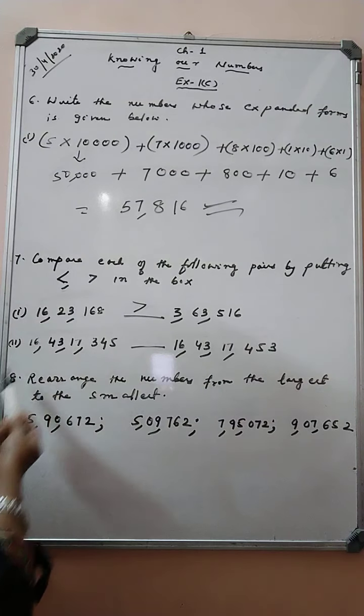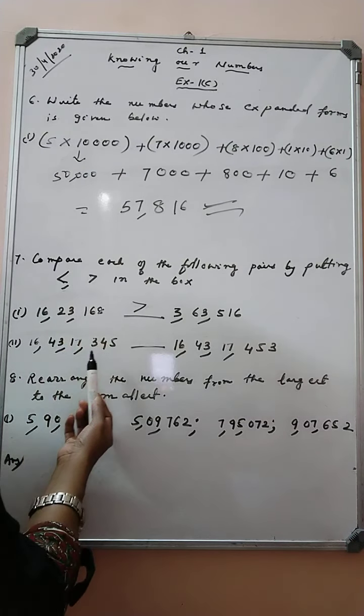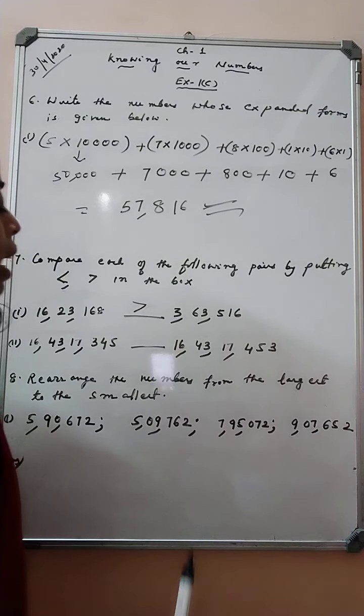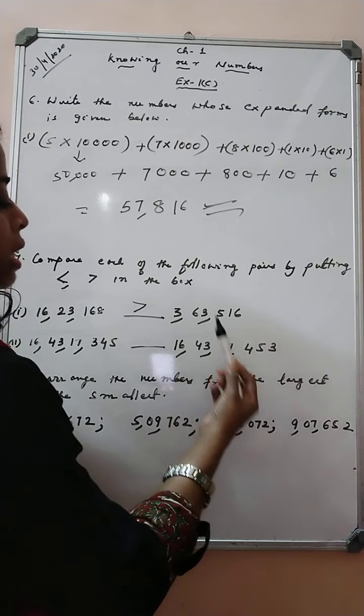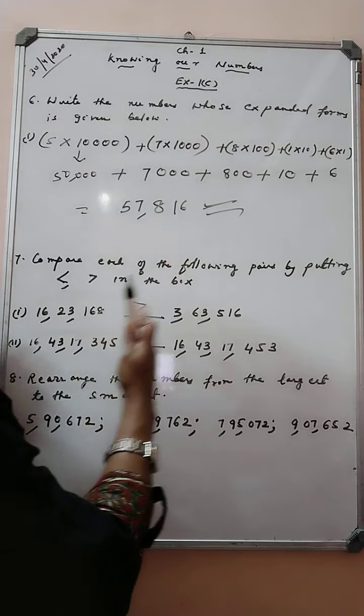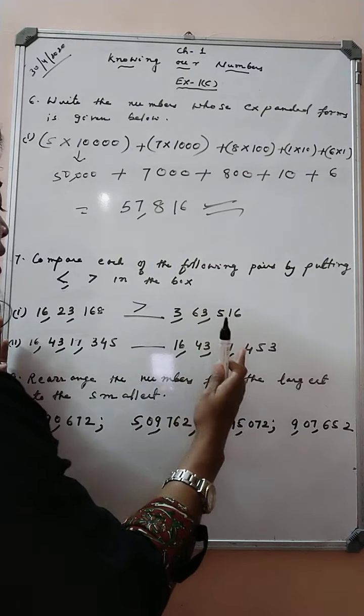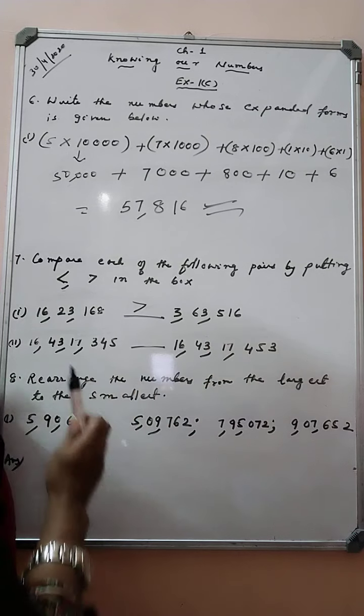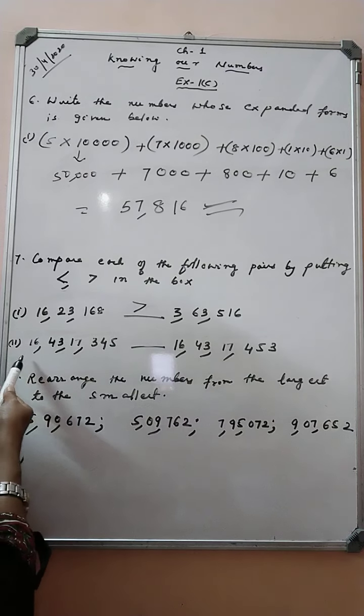Here we have 16,43,17,345. Here we have 16,43,17,453. Here also we have equal number of digits in both the number. So, let us compare from the left hand side.